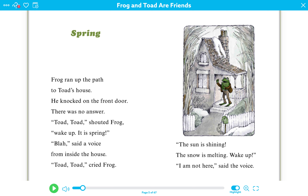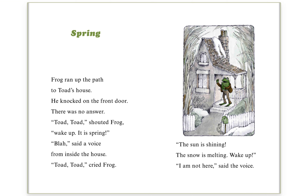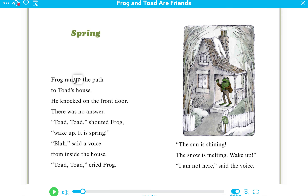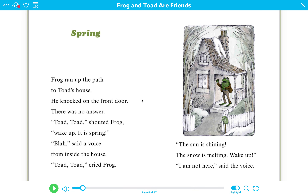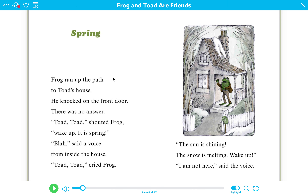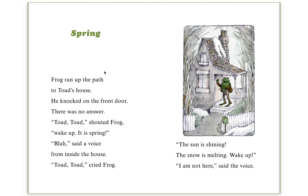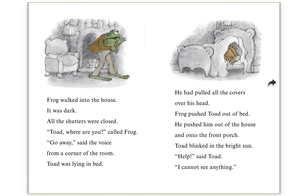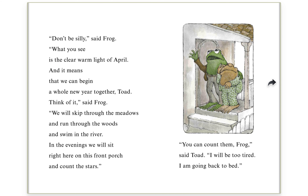Every author makes decisions about what they want their book to look like. You can see in this book, Frog and Toad Are Friends, the author chose to make their headings or their chapter titles green, and then the rest of the text a different color. This really makes the chapter titles pop out. You can also see that the author chose to have some pages with no pictures, and then some pages that have pictures.